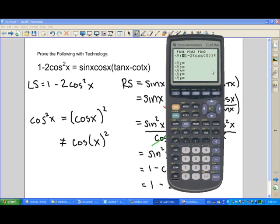My next function is sine x times cos x times the tangent of x minus the cotangent of x. Now, we don't have a cotangent function on the graphing calculator, but I can put this in as one divided by the tangent of x, since the cotangent is the reciprocal function.